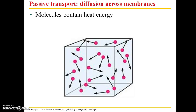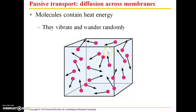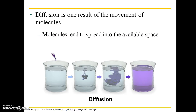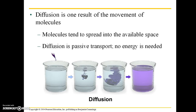Molecules contain heat energy, and as a result of this they vibrate and wander randomly. So if you have a cube here containing various types of molecules in a liquid solution, those molecules are going to kind of just move about randomly. This would be true for gases as well. Diffusion is one result of the movement of molecules — molecules tend to spread into the available space. Diffusion is a type of passive transport.